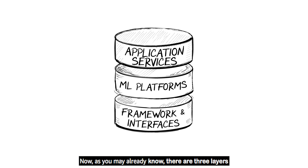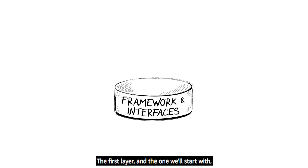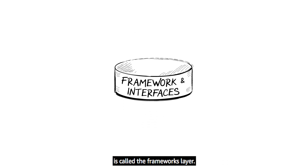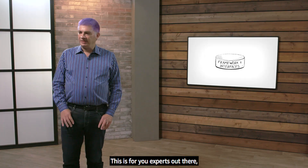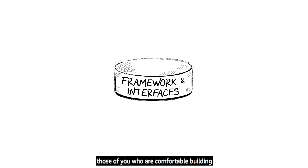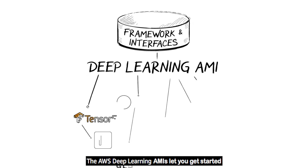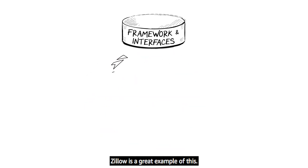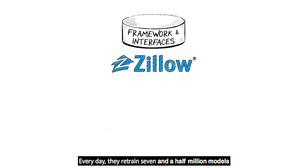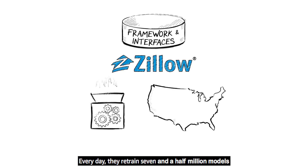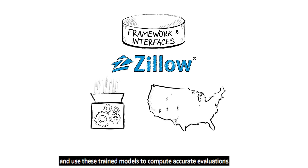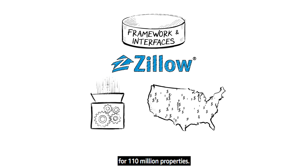As you may already know, there are three layers to the machine learning stack. The first layer, and the one we'll start with, is called the Frameworks layer. This is for you experts out there — those of you who are comfortable building and training your own machine learning models. The AWS Deep Learning AMIs let you get started with this very quickly. Zillow is a great example: every day, they retrain 7.5 million models and use these trained models to compute accurate valuations for 110 million properties.